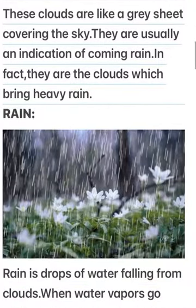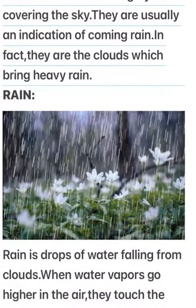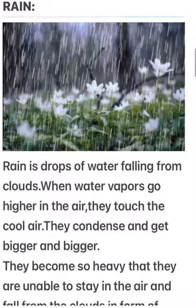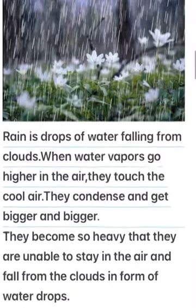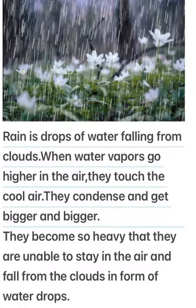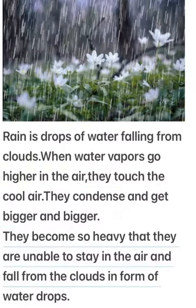Rain. Rain is drops of water falling from clouds. When water vapors go higher in the air, they touch the cool air, they condense and get bigger and bigger. They become so heavy that they are unable to stay in the air and fall from the clouds in the form of water drops.